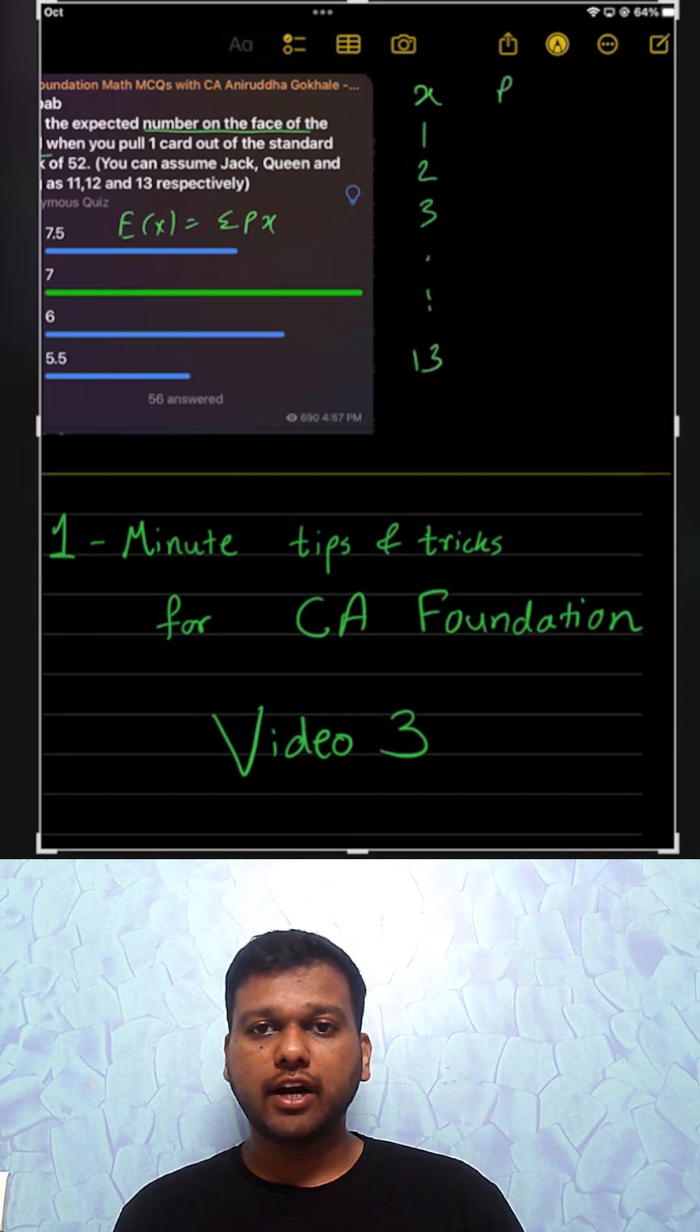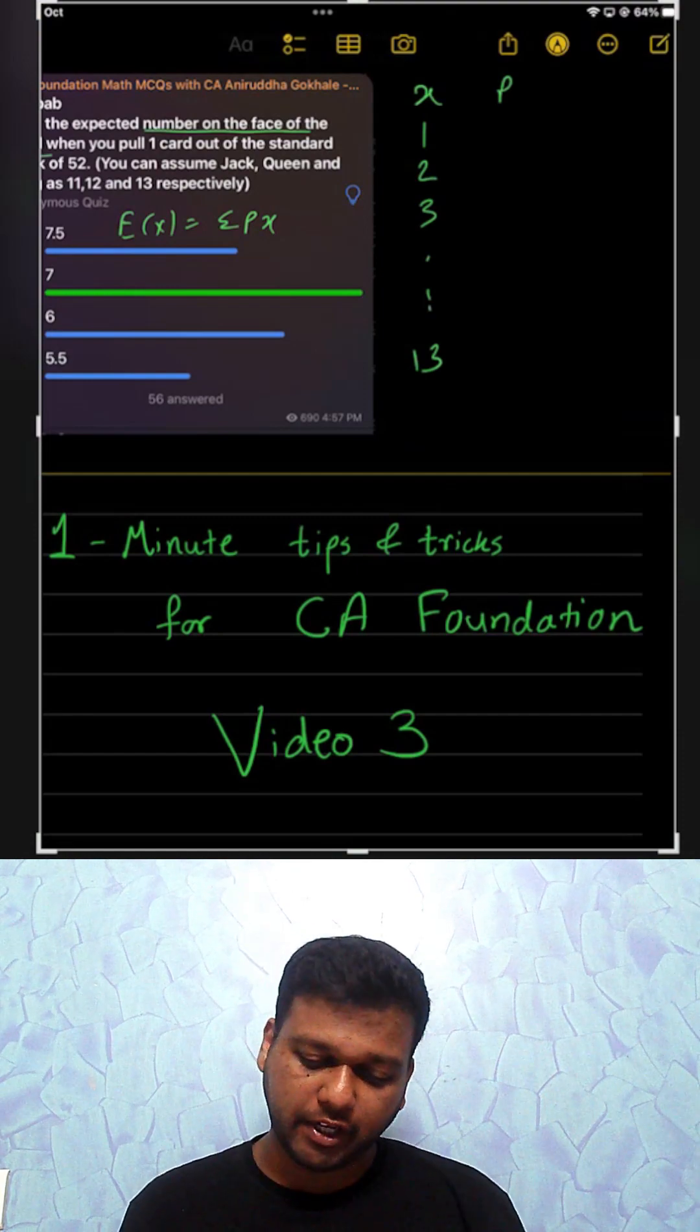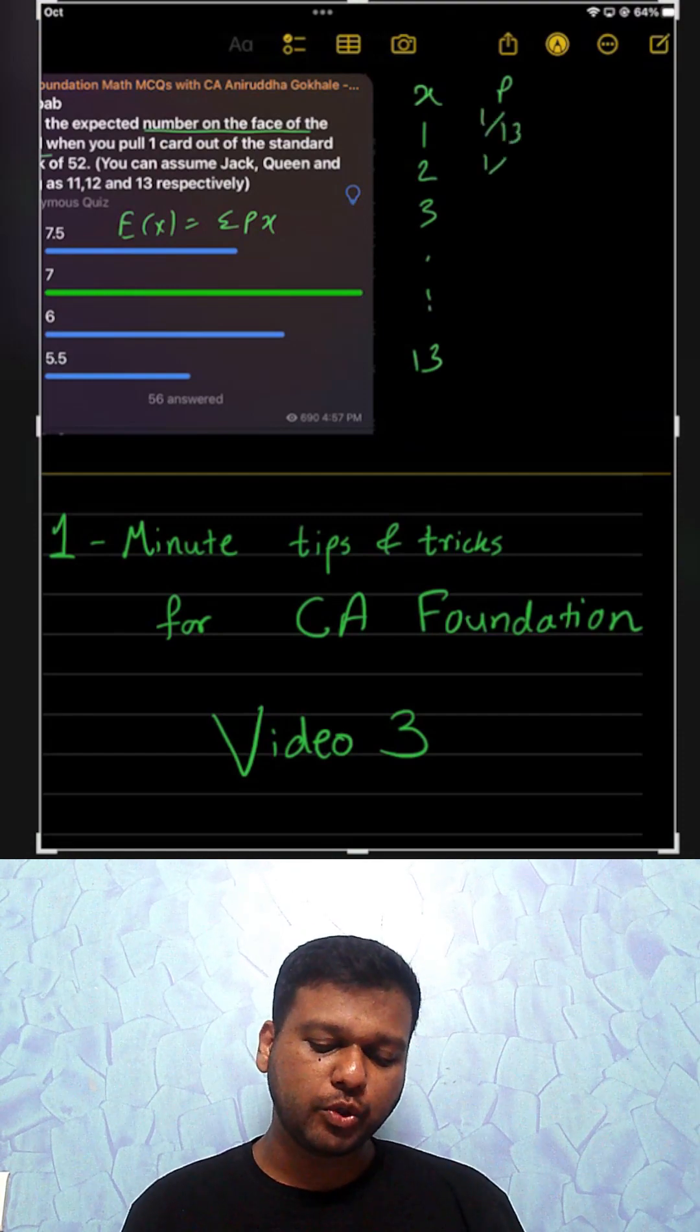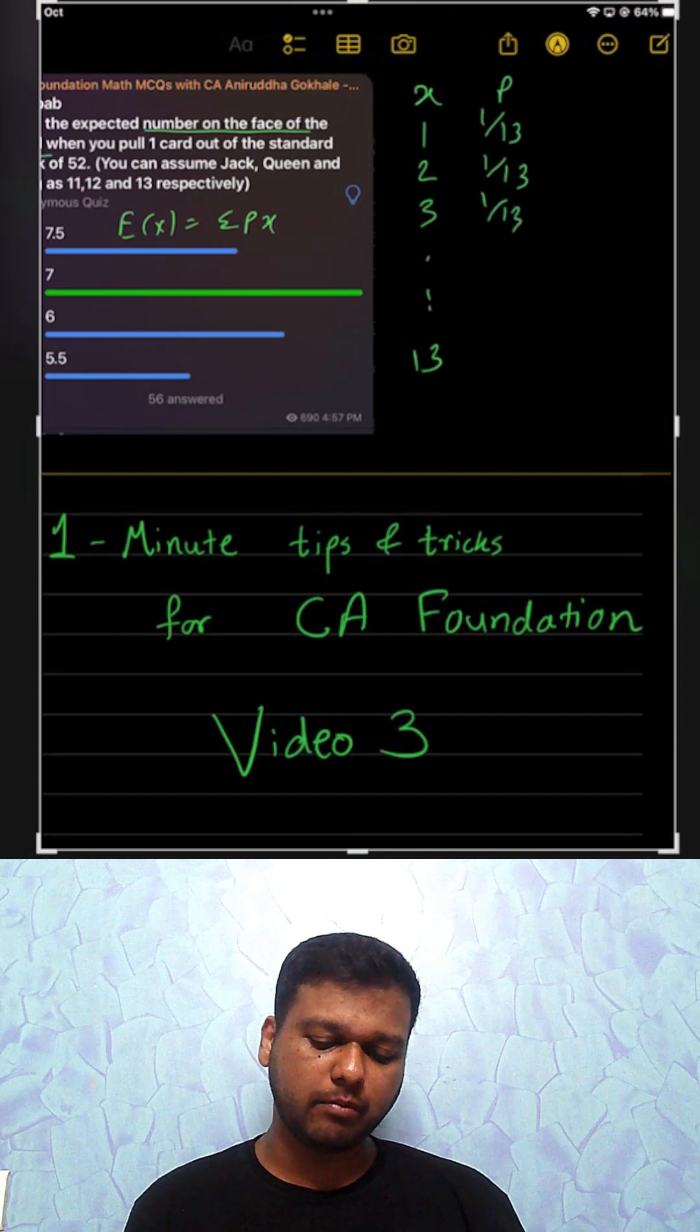What is probability of each card? There are 4 aces out of 52. 4 by 52 is 1 by 13. There are 4 2s, so 1 by 13. 4 3s, so 1 by 13 and so on.